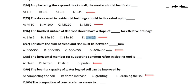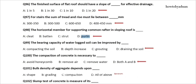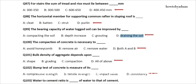Question 97: For stairs, the sum of tread and rise must lie between how many mm? The answer is option D: 400 to 450 millimeters. Question 98: The horizontal member for supporting common rafter and sloping roof is? The answer is option D: Purlin. Question 99: The bearing capacity of waterlogged soil can be improved by? The answer is option D: Draining the soil. Question 100: The compaction of concrete is necessary to? The answer is option D: Both A and B. Question 101: Bulk density of aggregate depends upon? The answer is option D: All of the above.